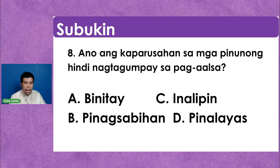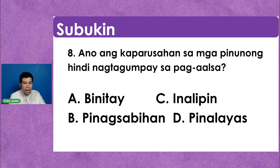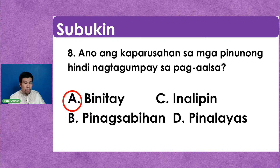Number eight: ano ang kaparusahan sa mga pinunong hindi nagtagumpay sa pag-aalsa? A — binibitay; B — pinagsasabihan o reprimand; C — inaalitin; o D — pinalayas. Ayon kina Krisha, Christine, Maria, Mark, Marie Chris, Rachel — letter C; ayon kina Gracelle, Alex, Raynol, Lawrence — letter A. Ang kasagutan ay letter A — pagbibitay ang parusa sa mga pinunong hindi nagtagumpay sa pag-aalsa.